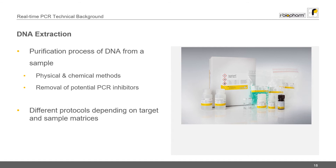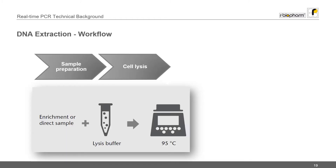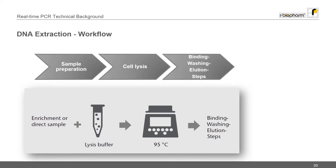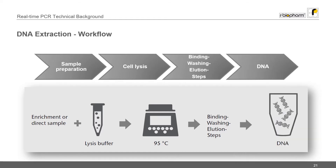Depending on the target and the matrix, rBiopharm offers different sample preparation protocols. The first step during DNA isolation is the lysis. Lysis buffer is added and the sample is incubated at high temperatures in order to break open the cell and release the DNA. After the lysis step, the DNA is in some cases further washed and purified using spin filters, for example. This process takes up to one and a half hours depending on the protocol. Afterwards you can directly use the DNA for PCR analysis.